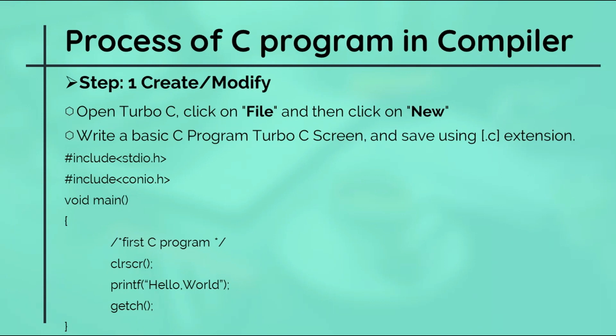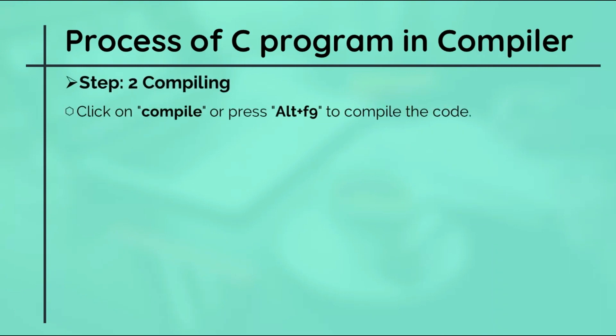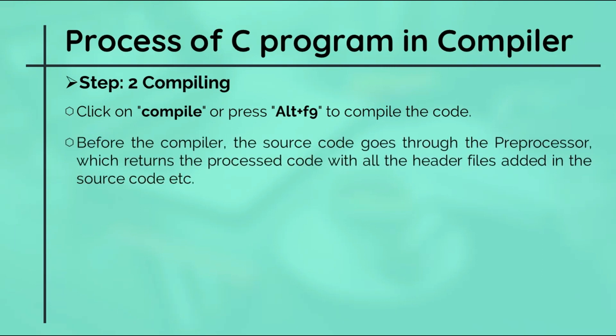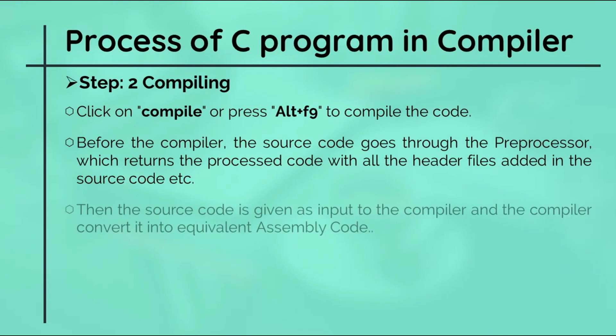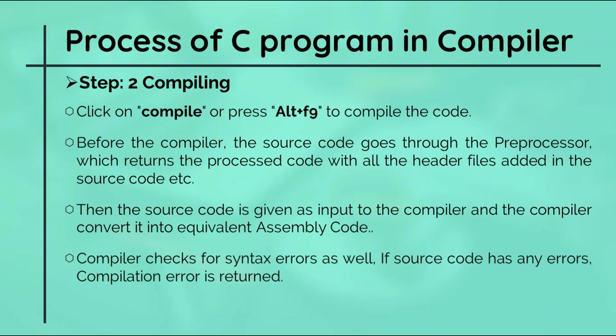Second one is compiling. Click on compile or press Alt plus F9 to compile the code. Before the compiler, the source code goes through the preprocessor which returns the preprocessed code with all the header files added in the source code. Then the source code is given as an input to the compiler and the compiler converts it into the equivalent assembly code. The compiler checks for syntax errors as well. If the source code has any error, compilation error is written. Once the code reaches the assembler, the code is converted into the object file that is dot OBJ.